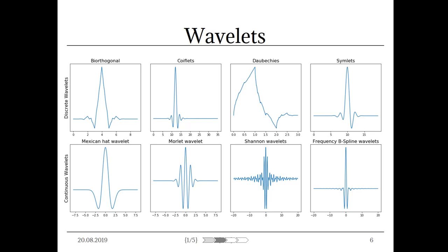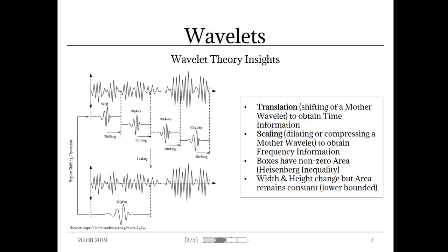The word wavelet stems from the French word 'ondelette' and means 'little wave.' One can distinguish discrete and continuous wavelet transformations. We will only present continuous wavelet transformations in this talk, since we only analyze the returns of our stock. To use wavelets, one simply takes a given wavelet and shifts it through the signal. Doing so, we calculate coefficients which indicate how close the wavelet and the signal are at a given point in time. Therefore, we obtain time information, since our wavelet is finite. This part is called translation.